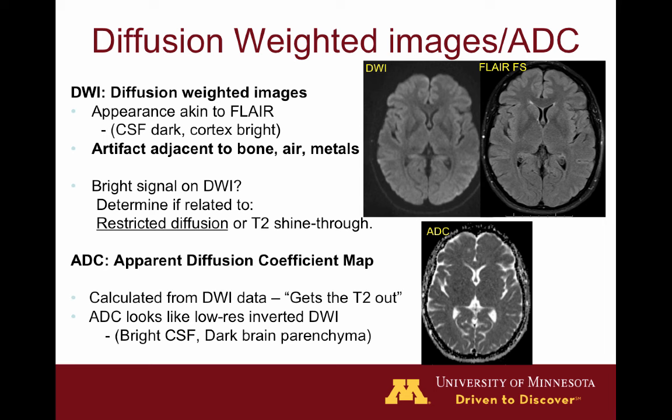Diffusion-weighted images have some T2 weighting to them, so things with a lot of edema will sometimes show up slightly bright on DWI. Therefore we use a second set of images called the ADC map, or Apparent Diffusion Coefficient Map. It looks like an ugly low-resolution T2-weighted image, but it shows us exactly a picture of water diffusion. High signal on ADC represents freely moving water, and dark signal means not very mobile water.